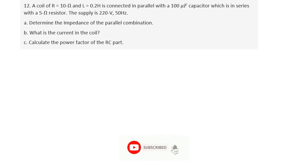Now let's try this question. A coil of resistance 10 ohms and inductance 0.2 henrys is connected in parallel with a 100 microfarad capacitor, which is also in series with a 5 ohm resistor. The supply is given to be 220 volts 50 hertz. A: Determine the impedance of the parallel combination. B: What is the current in the coil? And C: Calculate the power factor of the RC part.